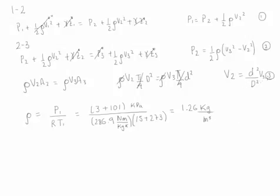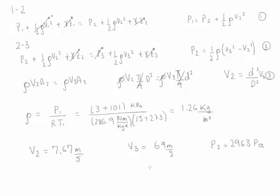After doing the algebra, we find that velocity at point two is equal to 7.67 meters per second, velocity at point three is equal to 69 meters per second, and the pressure at point two is equal to 2963 pascals. We can also determine the flow rate by multiplying velocity at point two times area at point two, or equivalently velocity at point three times area at point three, giving a flow rate of 0.00542 cubic meters per second.